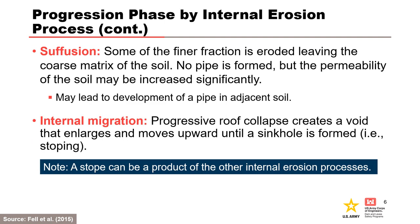For suffusion, some of the finer fraction is eroded, leaving the coarse matrix of the soil. No pipe is formed, but the permeability of the soil may be increased significantly. For internal migration, progressive roof collapse creates a void that enlarges and moves upward in the embankment until a sinkhole is formed, resulting in stoping.